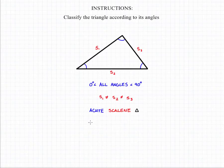So if we take all that information and put it together, we'll have our final answer, which is that we can classify this triangle as an acute scalene triangle.